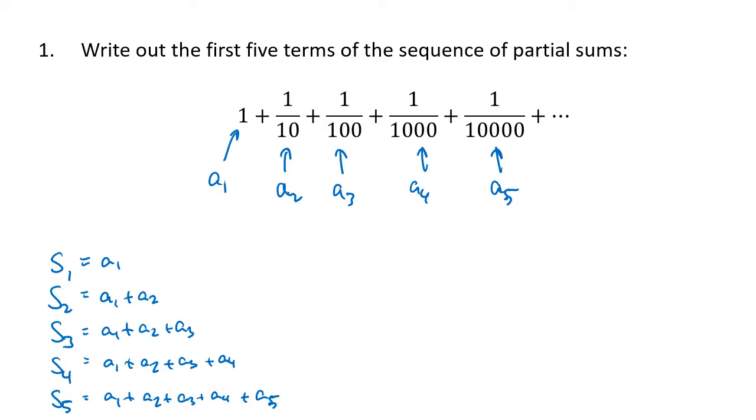In this case, a₁ is just 1, a₁ plus a₂ is 1 plus 1/10 so that'll be 1.1, a₁ plus a₂ plus a₃ is 1.11, then we get 1.111, and then 1.1111. For this problem all we're being asked to do is to actually find the first five terms of the sequence of partial sums and we've done that.